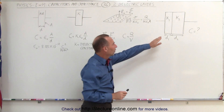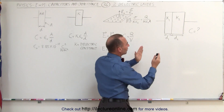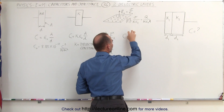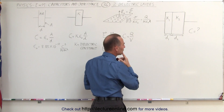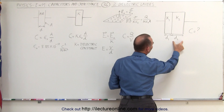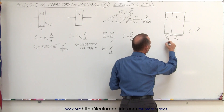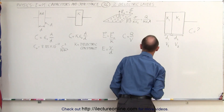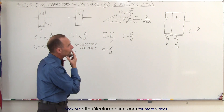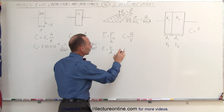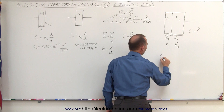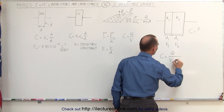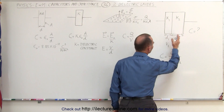Now, how do you find the capacitance of this? It turns out if we can find the total potential difference, we can figure out the capacitance by simply taking the charge divided by the potential difference. We can realize that the potential difference will be divided between the two dielectrics. So this region will have potential difference V1, and this region will have potential difference V2. The capacitance can be found by taking the total charge on the capacitor divided by the sum of the two voltages, since the total voltage is simply the sum of the two.